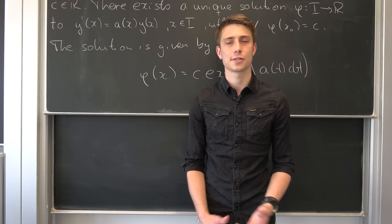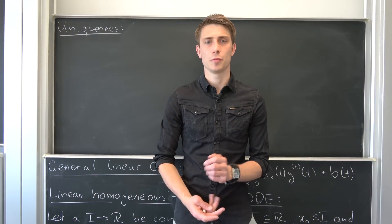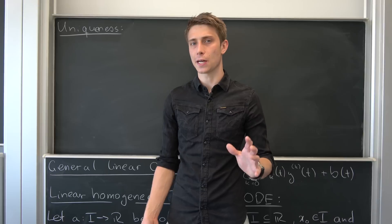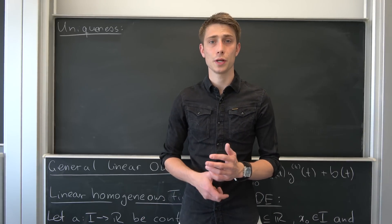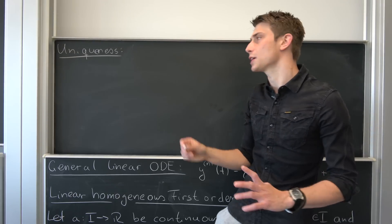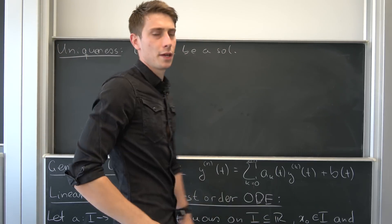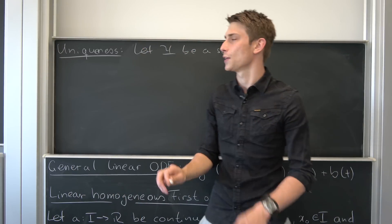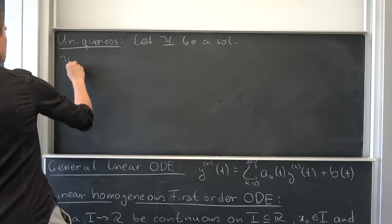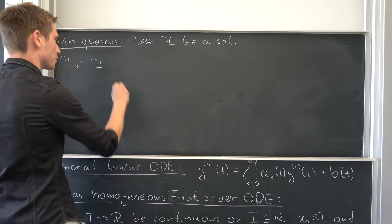Now for uniqueness — not quite as straightforward, but still easy. To show uniqueness, we need to show that any new solution ψ to the problem can be expressed in the same unique form. The first step: let ψ be a solution to this differential equation. Now we want to play around smartly — let's define a new differentiable function ψ₀, which is the product of ψ and some mysterious φ₀ we don't yet know anything about.